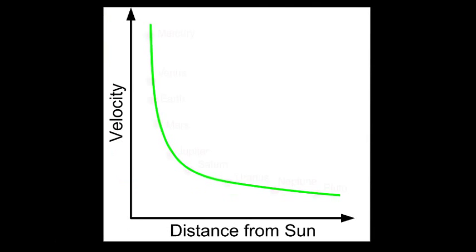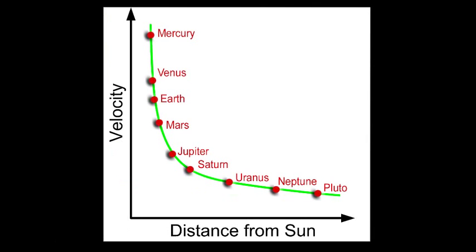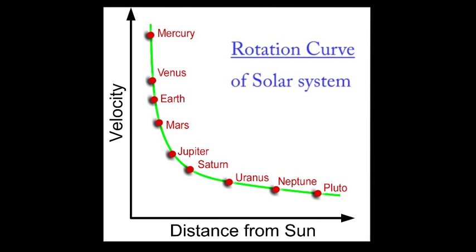If we plot the velocities of planets with respect to their distance to the Sun, we get a curve where at smaller distances velocities are relatively high, and as we go further away they get lower and lower. Unsurprisingly, this is exactly what we observe in our solar system. A curve like this is what we call a rotation curve.